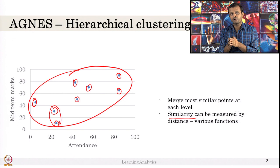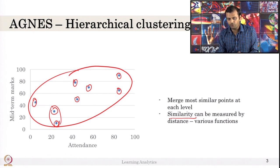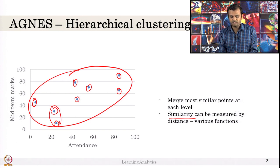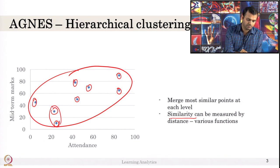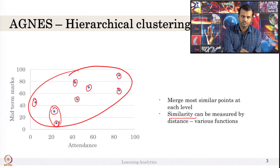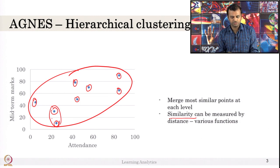To merge the most similar points, we need a similarity measure. Last time we saw Euclidean distance to measure distance between centroid and data points. Similarly, here we also have similarity distances — various formulas. It is not important to know all formulas, but understand there is a similarity function which measures similarity between two points. If this point is more similar to that point, these two will be merged first as step 1.